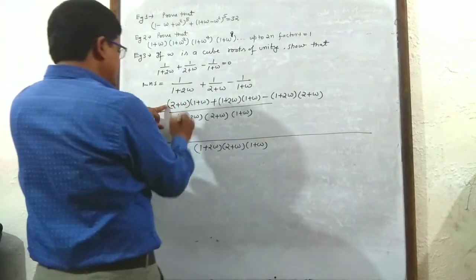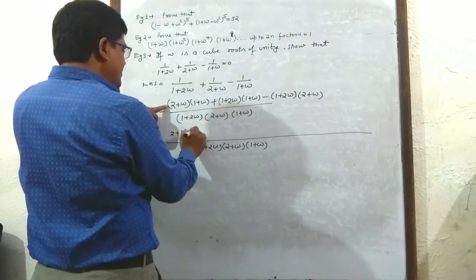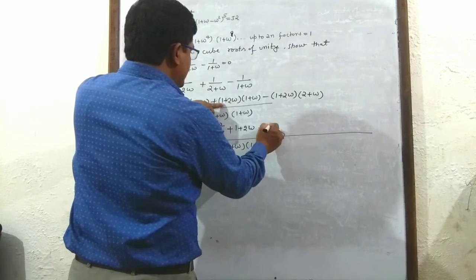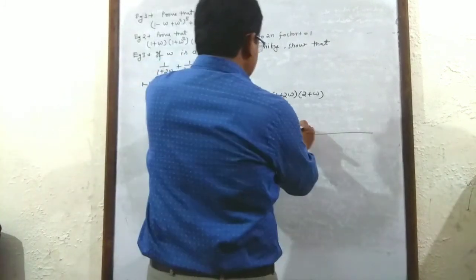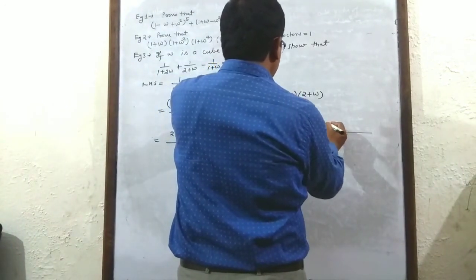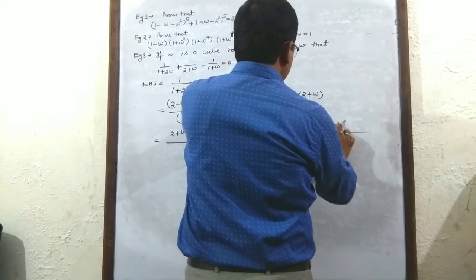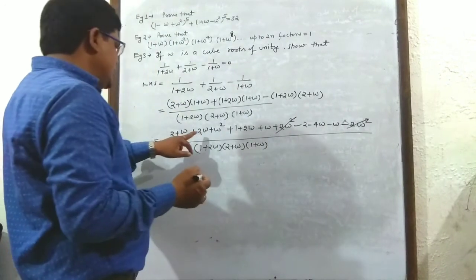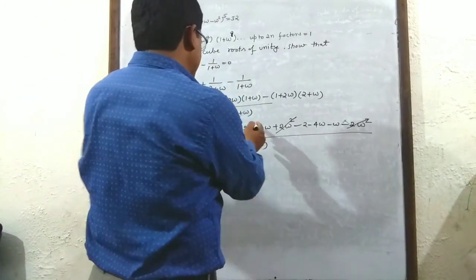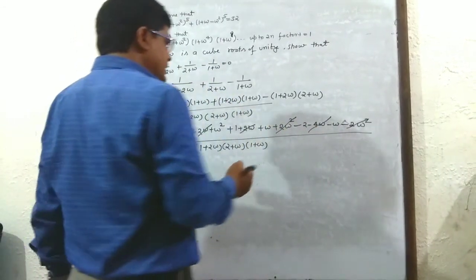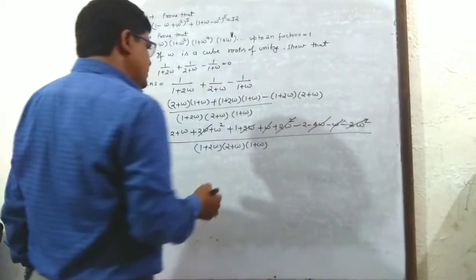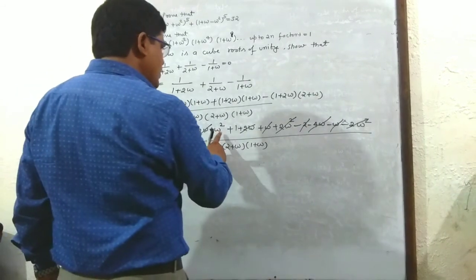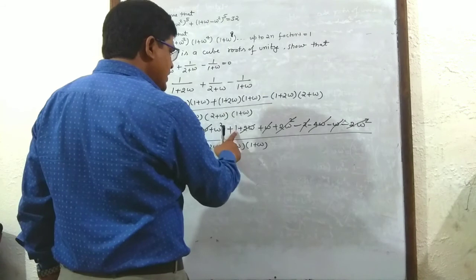Expanding the numerator: (2 + ω + 2ω + ω²) + (1 + 2ω + ω + 2ω²) - (2 + 4ω + ω + 2ω²). Cancelling terms: 2ω² and 2ω² cancel, 4ω and 4ω cancel, ω and ω cancel, and 2 and 2 cancel, leaving ω + ω² + 1.